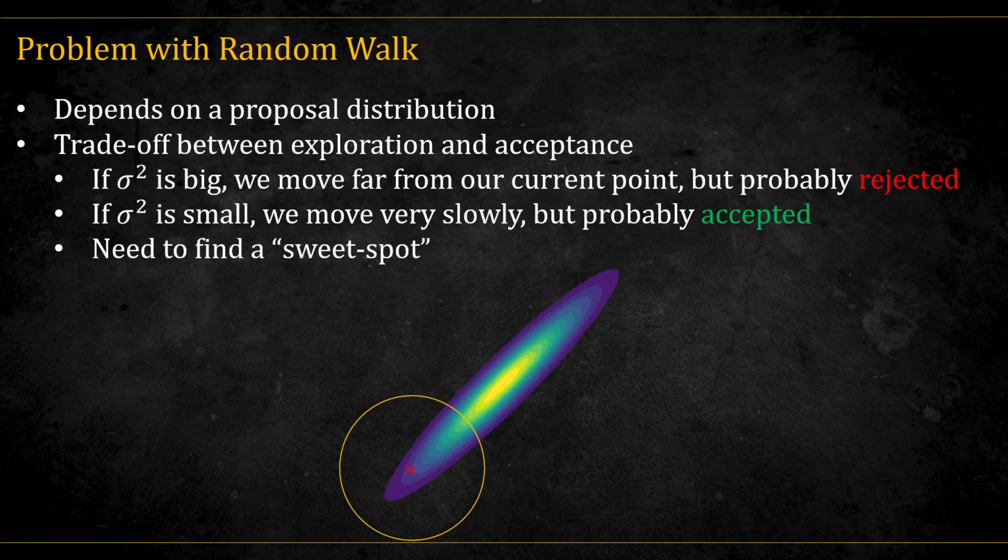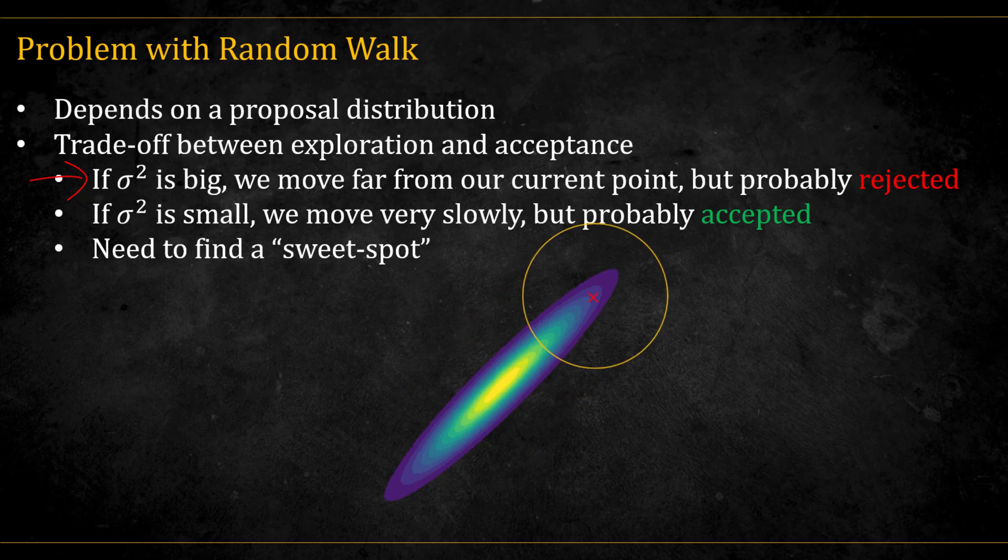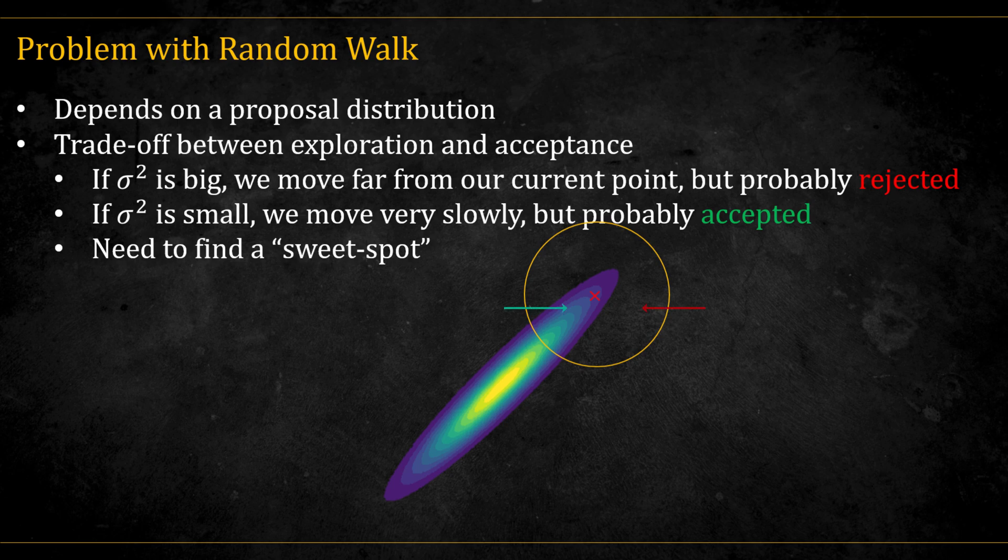In the previous video, we looked at the Metropolis-Hastings algorithm, where we explore the state space by taking random walks based on a proposal distribution. The challenge is that the efficiency of this exploration depends heavily on the variance of that proposal. If the variance is too large, we take big jumps that let us cover ground quickly, but most of those jumps land in regions of very low probability, so they get rejected.